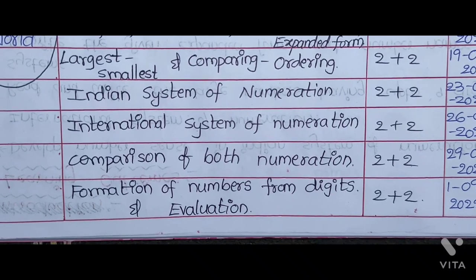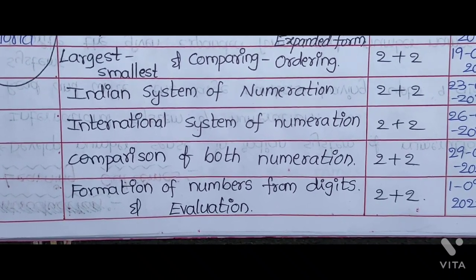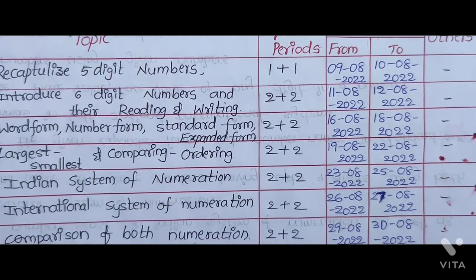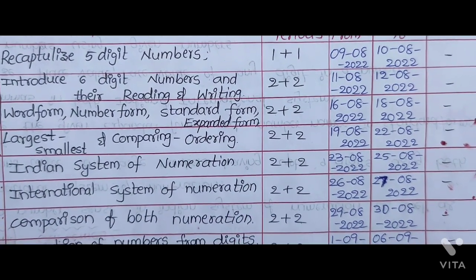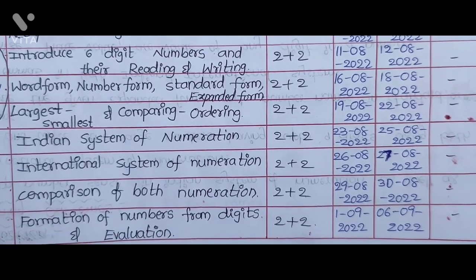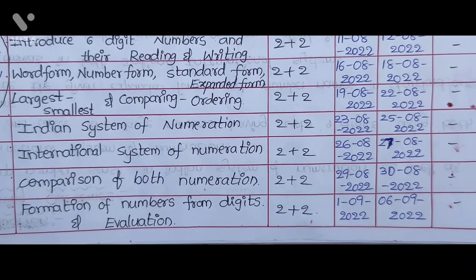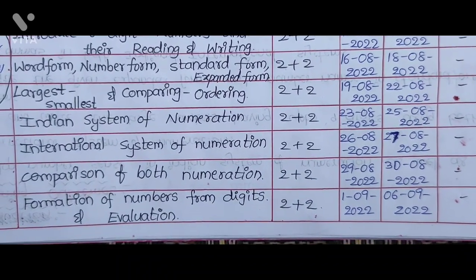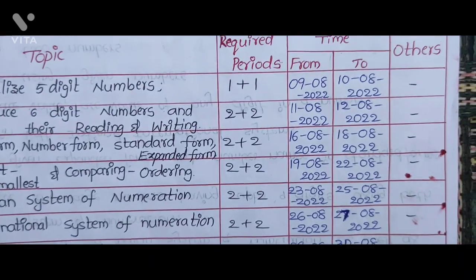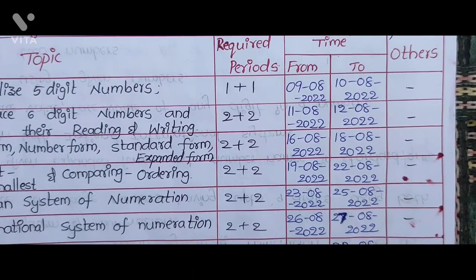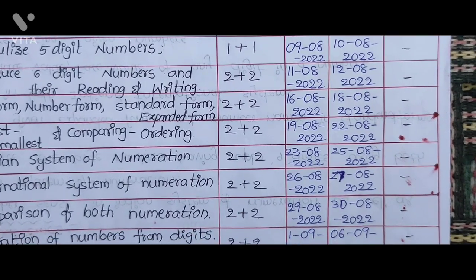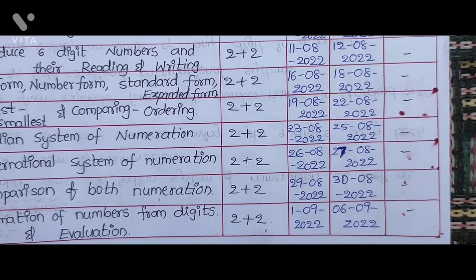The total periods for the My Number World lesson are 15, as per the Teacher Handbook. Period allocation: 5-digit numbers — 1 plus 1; Introduce 6-digit numbers and their Reading and Writing — 2 plus 2; Word Form, Number Form, Standard Form, Expanded Form — 2 plus 2; Largest, Smallest, Comparing — 2 plus 2; International and Indian Systems — 2 plus 2; Comparison of Both Numeration — 2 plus 2; Evaluation — 2 plus 2. The From and To dates are taken from the Academic Calendar.